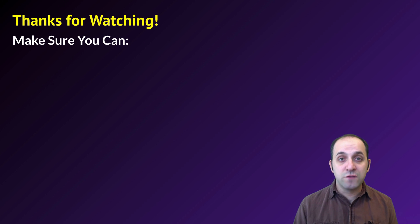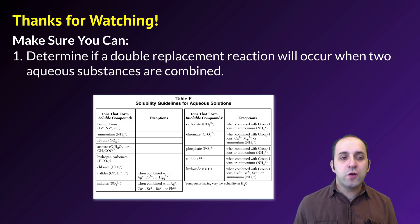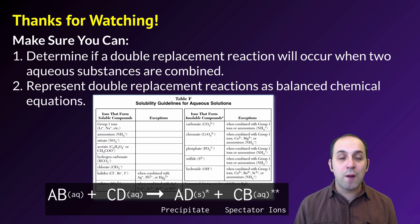Thanks so much for watching our discussion of double replacement reactions. Make sure you can do the following things here at the end. Make sure that you can determine if a double replacement reaction is going to occur when two aqueous substances are combined. Will a precipitate form? If it won't form, we will not get a double replacement reaction. Also make sure that you can represent double replacement reactions as balanced chemical equations. If you can do those things, you're doing great. If not, that's okay too. Write down any questions that you have. You can always leave them for me in the comments below the video, or you can always get in touch with me. Thanks again for watching, I really appreciate it. Have a great day.